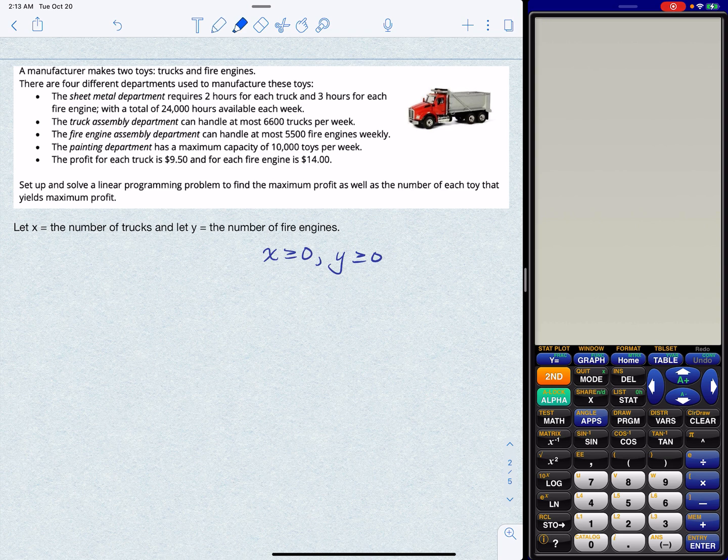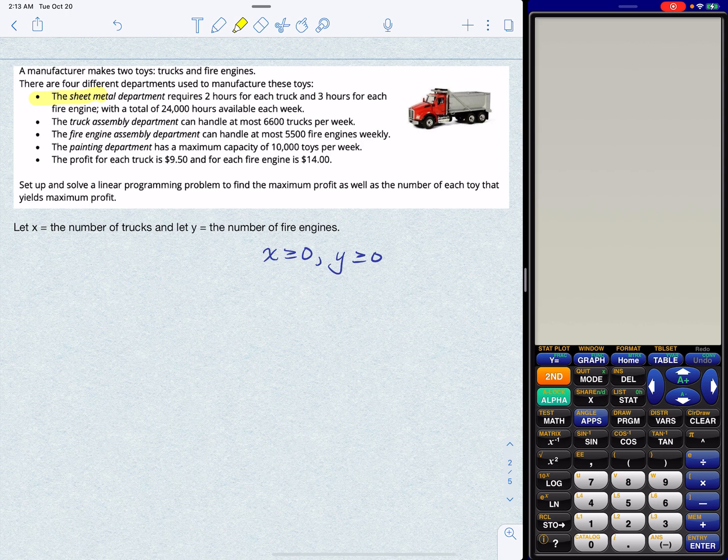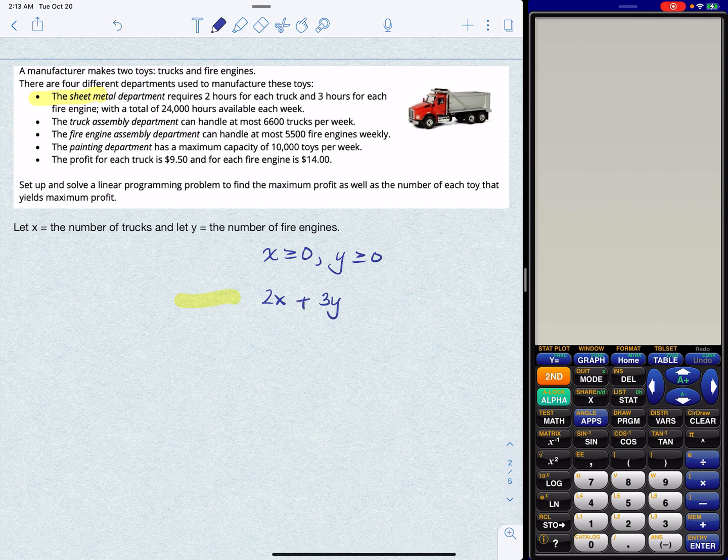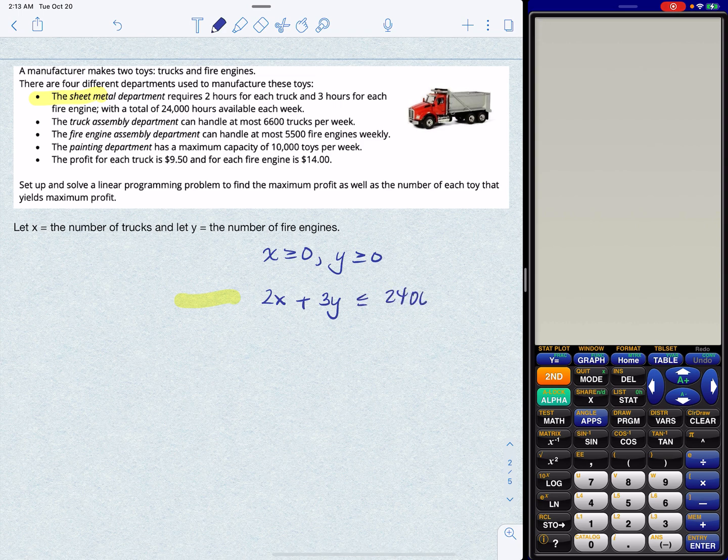So taking it step by step, looking at the first line here, so the sheet metal. So for the sheet metal, we know that each truck requires two hours and each fire engine requires three hours. So that means that 2x is the total time for the trucks. 3y is the total time for the fire engines. Add them together, we get the total time for both. And we know that together, they cannot go above 24,000. So we say less than or equal to because we're not necessarily going to use up every single hour. We might have some leftover.